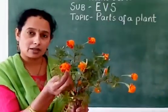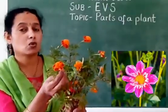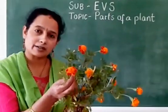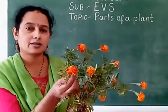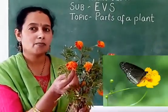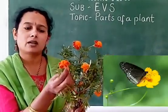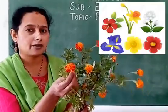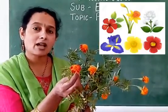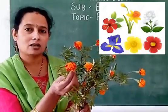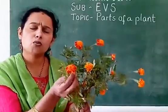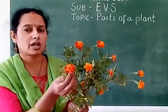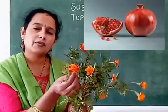The flower is the most beautiful part of the plant. It attracts insects and butterflies. Flowers are of different shapes, sizes and colors. Most of the flowers change into fruit.